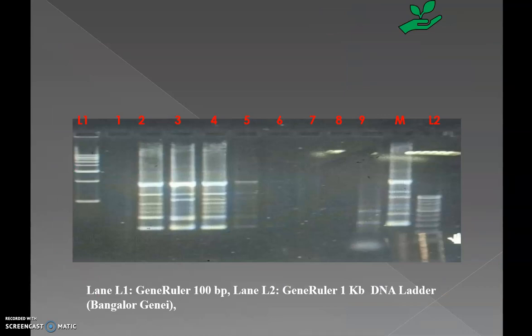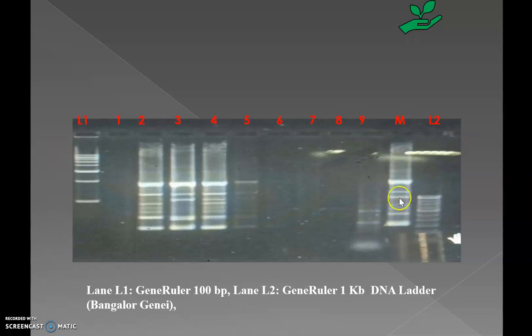After visualization, we can capture the image of the run DNA in our sample. Here we can see two lanes used as ladders: L1 is a 100 base pair ladder and L2 is a 1 kb DNA ladder. Lanes 1 to 9 contain our samples, and M stands for the mother plant. In the ladder lanes, different bands correspond to different base pair DNA segments present in our DNA sample.